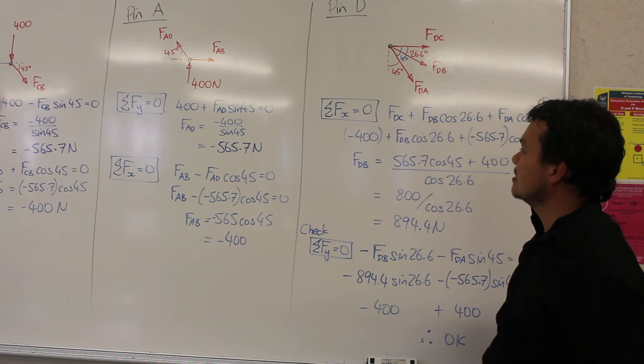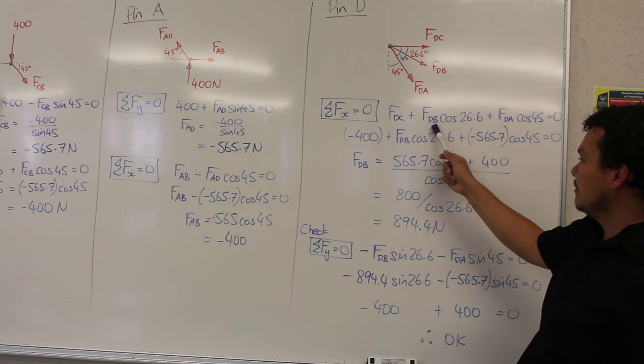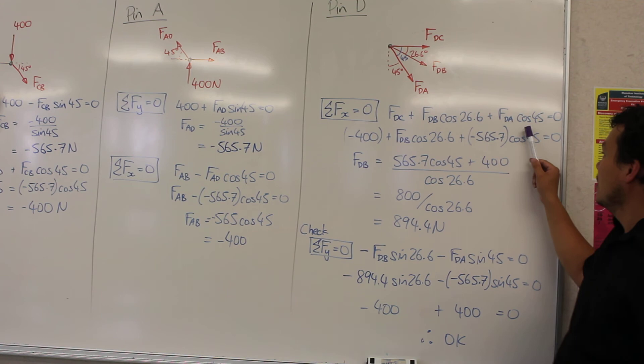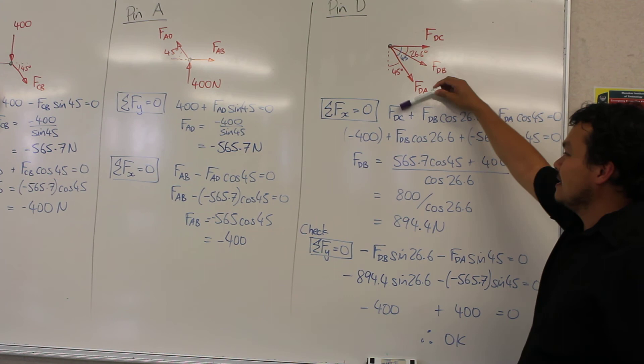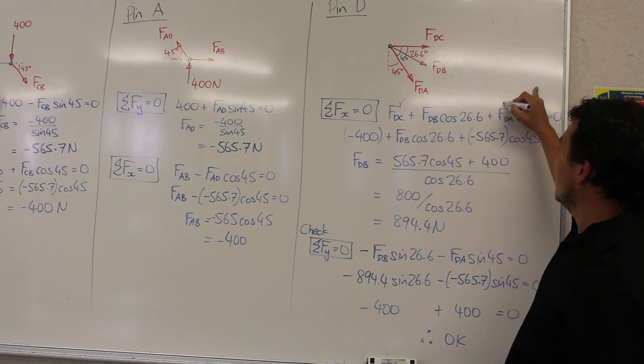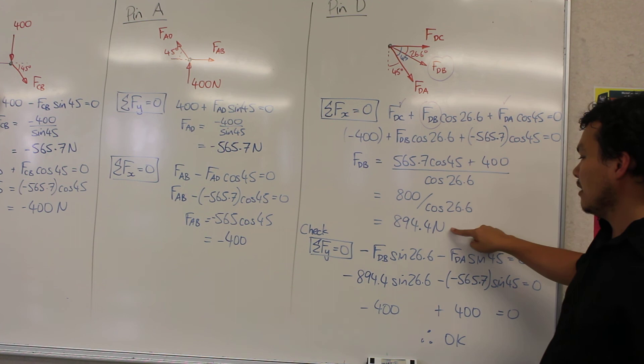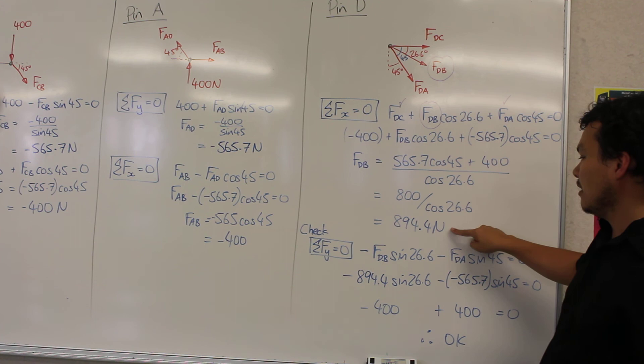We'll take the summation of forces in the x direction, we've got Fdc, Fdb cosine 26.6, and Fda going to the right as well, cosine 45. Fdc and Fdb, Fdc we know from previous calculations. Fda we know from the previous calculation, and we're trying to find out Fdb in this calculation here. Okay, so we can substitute and rearrange, and we get, for a final answer here for Fdb, 894.4 Newtons.